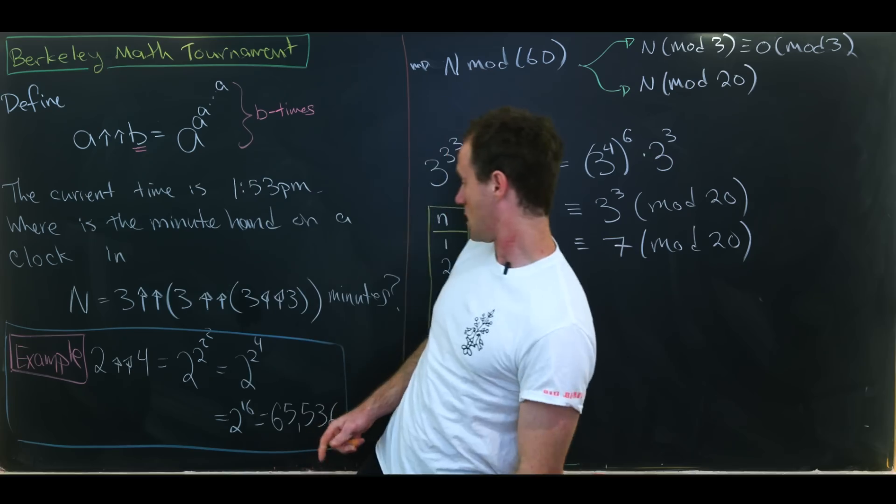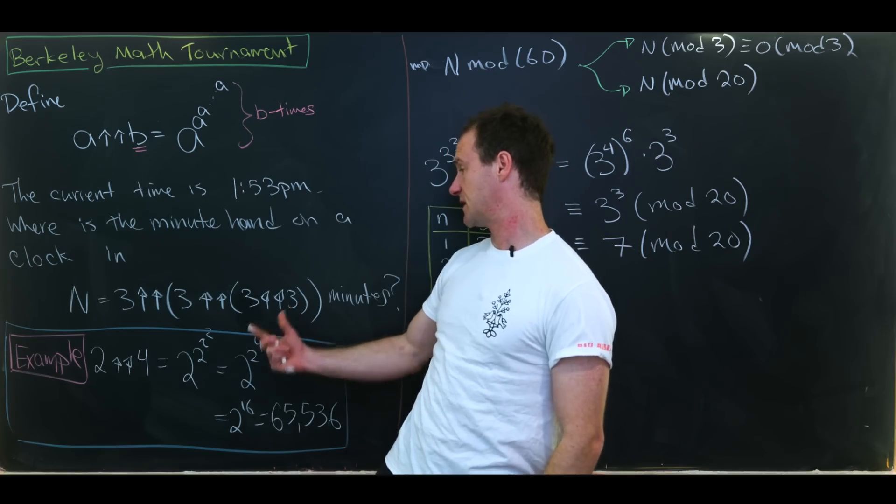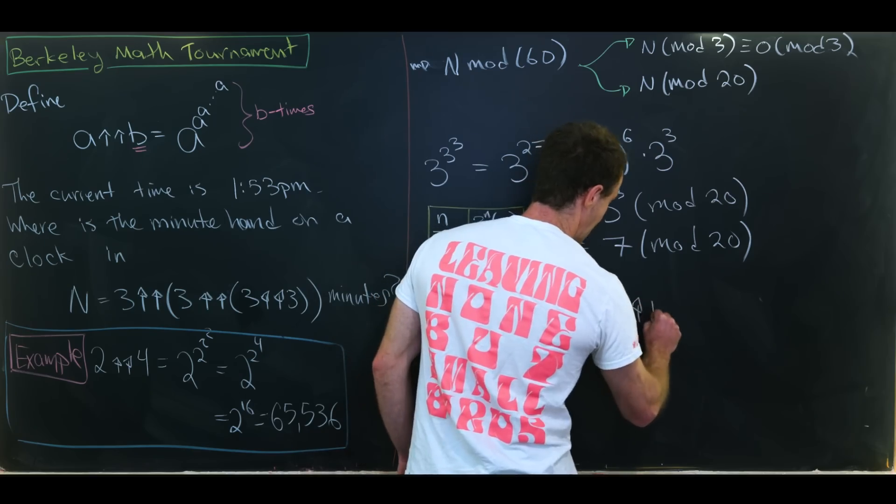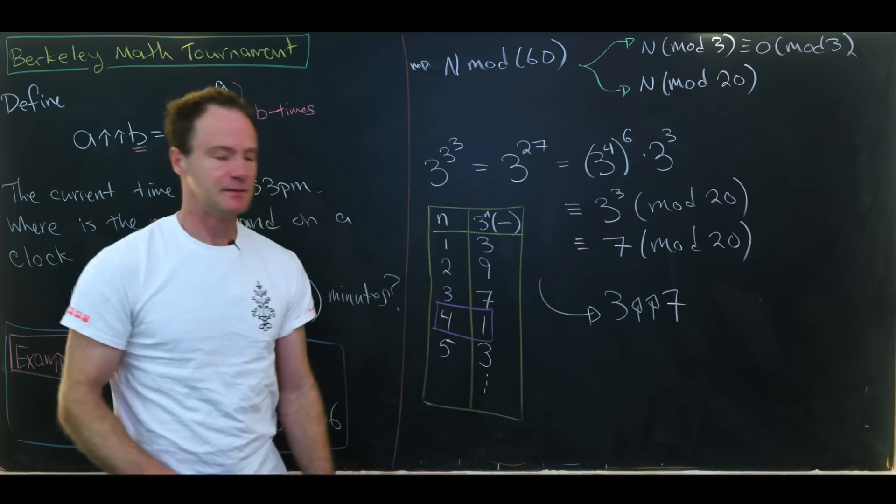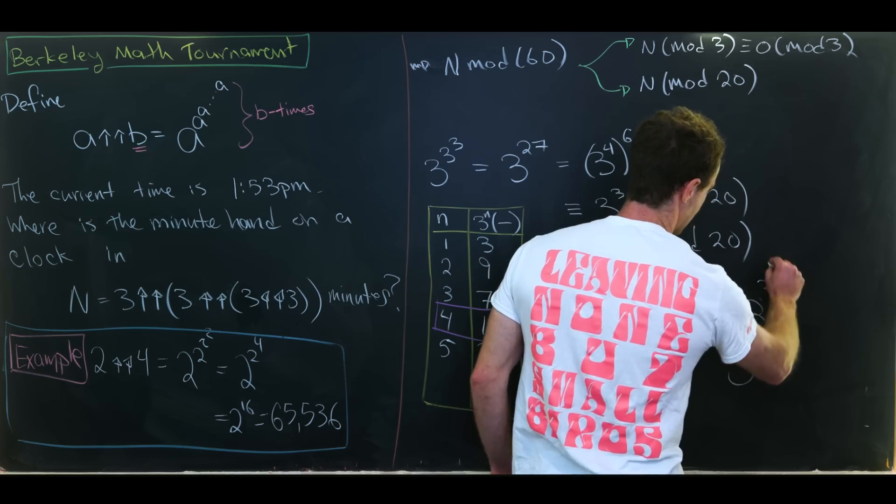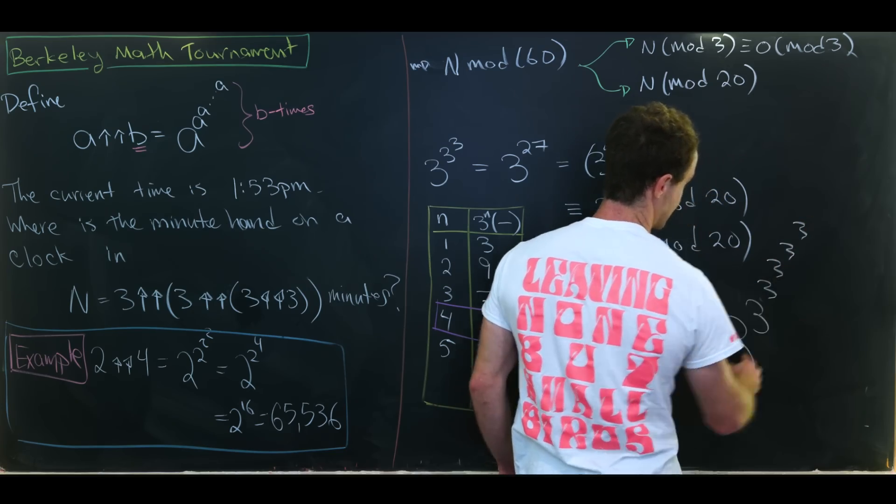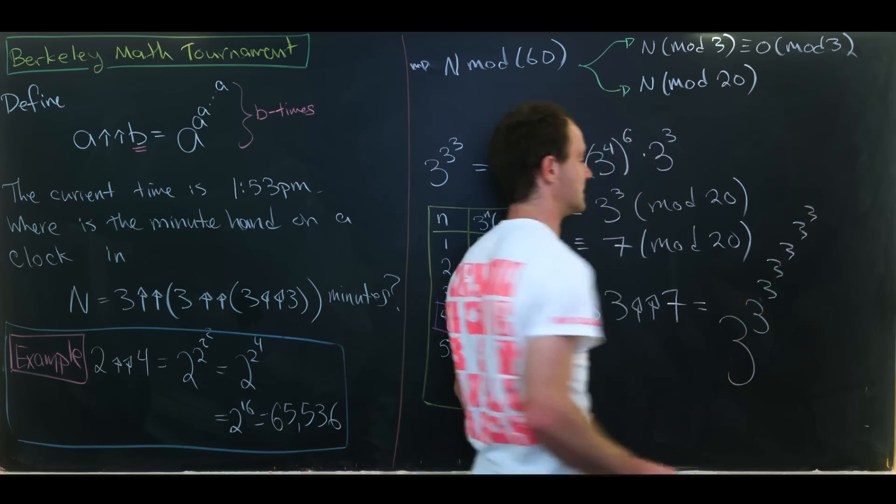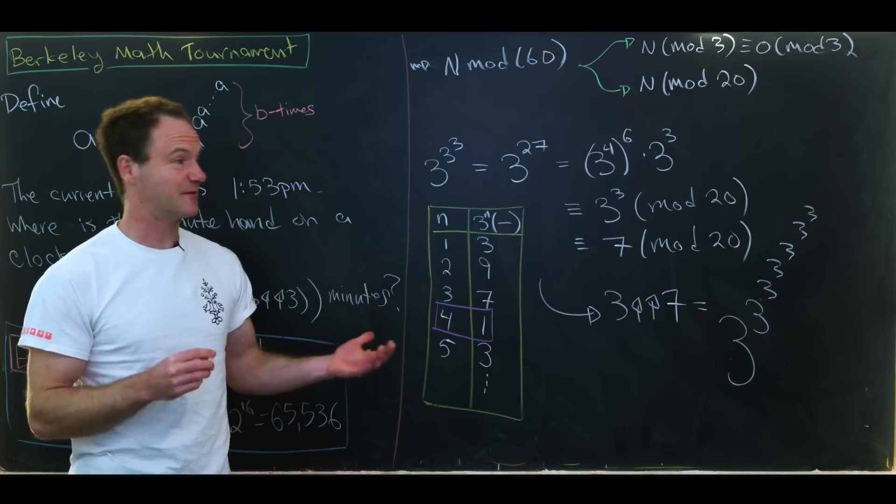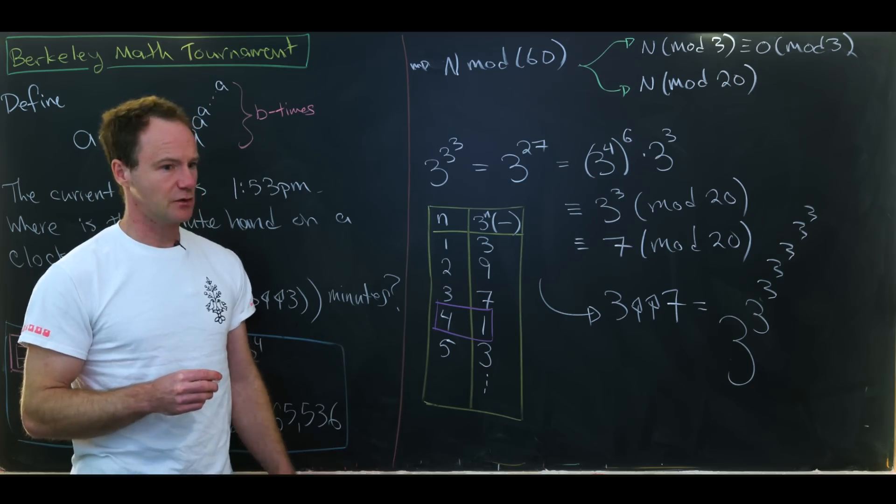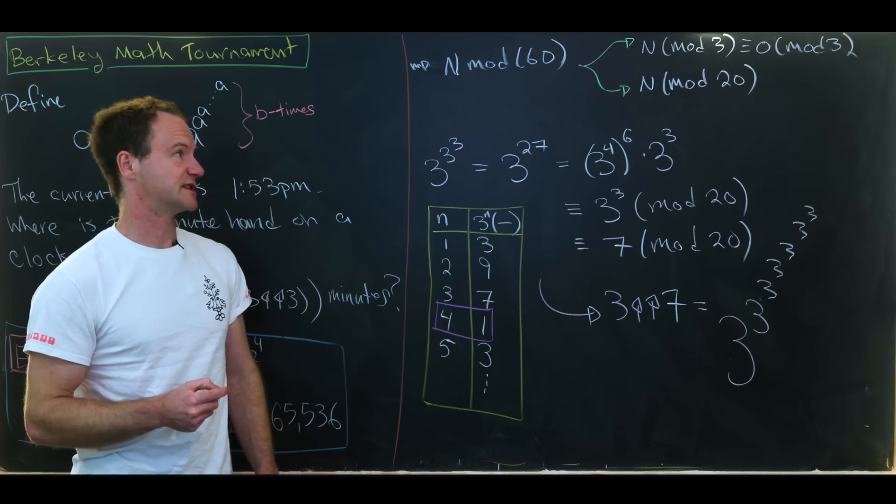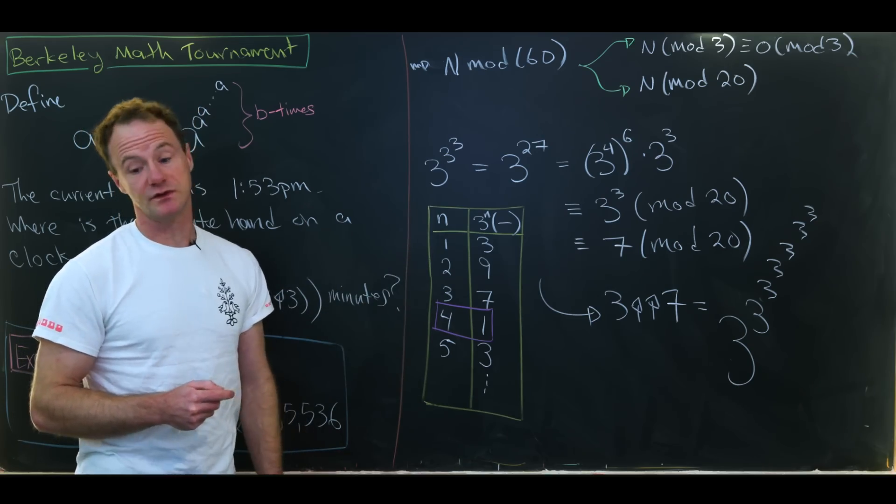Okay. So that's what's going on in this innermost bit. But that tells us that if we look at the next bit we want 3 arrow arrow 7 mod 20. But let's notice that 3 arrow arrow 7 is a power tower with 7 3s. And using the same strategy here is actually like a pretty difficult problem. So we might as well take advantage of Euler's theorem in order to simplify this. So let's clean up the board and then we'll do that.